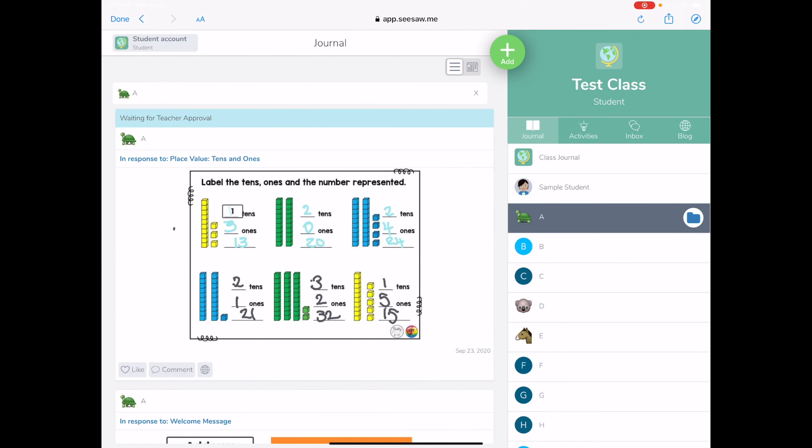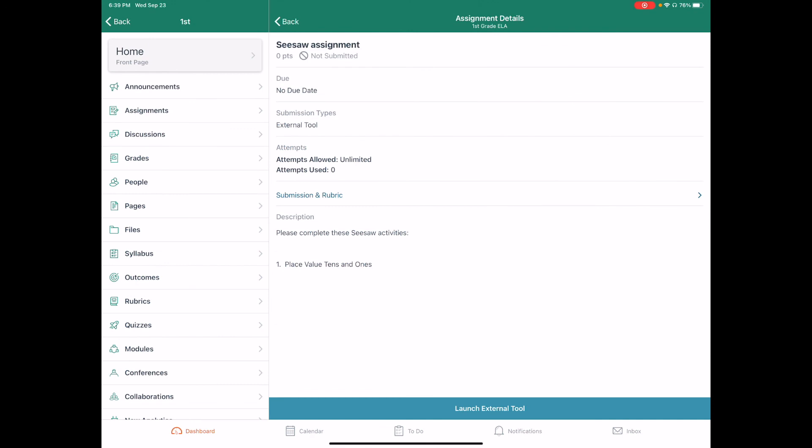Now I am back in Seesaw, and when I have completed all of my assignments in Seesaw, I know that I'm finished. This one's waiting for teacher approval. I can hit done in the upper left corner and I am right back in my Canvas course.